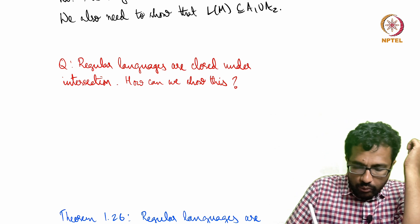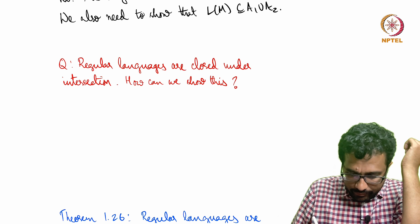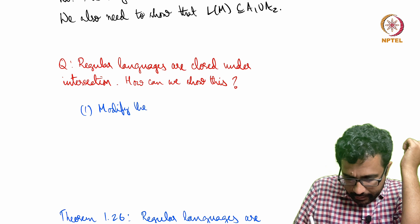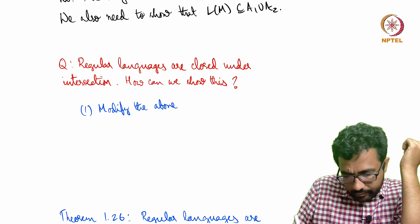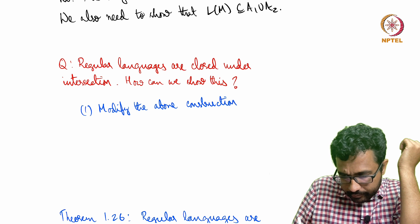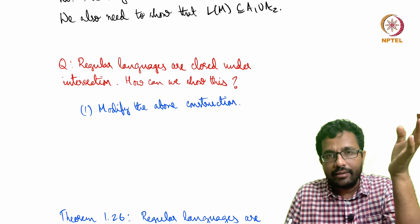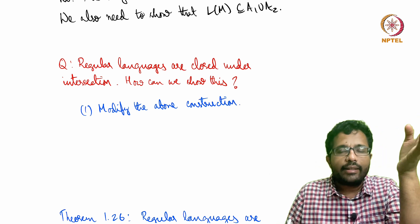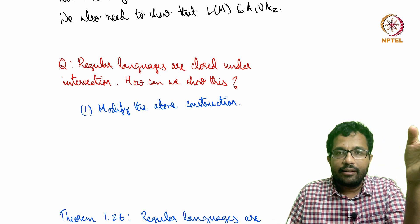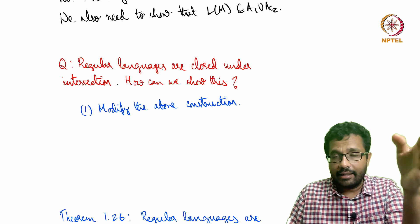There are two ways. One, we can modify the above construction—the same Cartesian product construction—we can modify it to get a DFA that recognizes the intersection language.